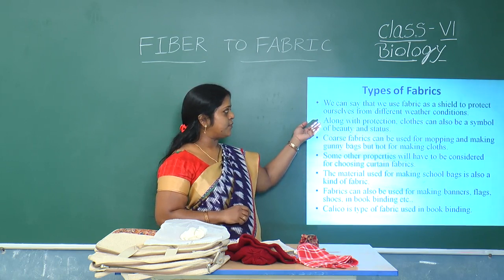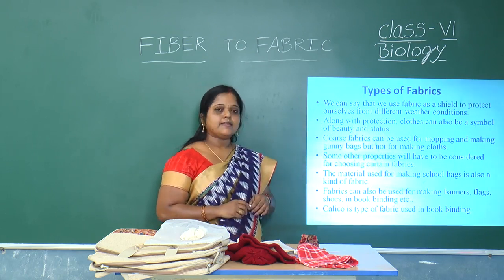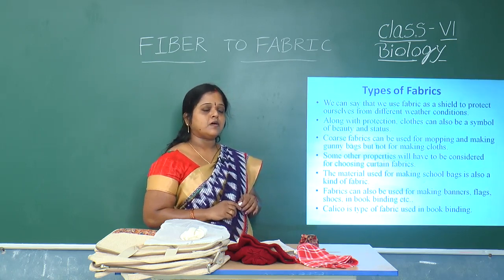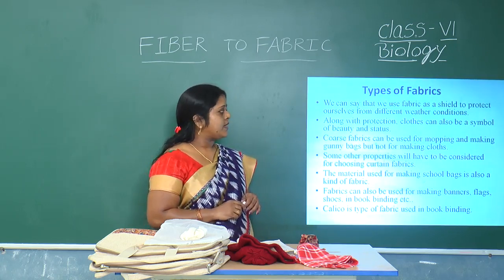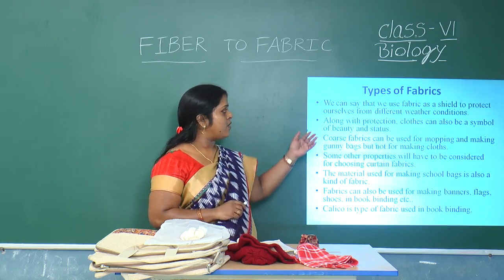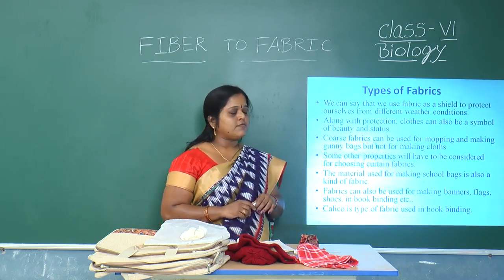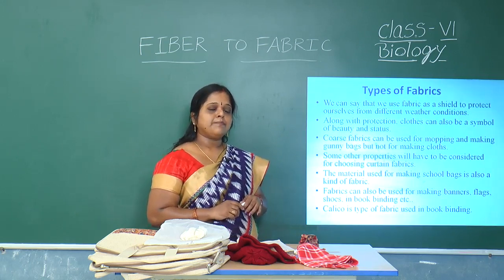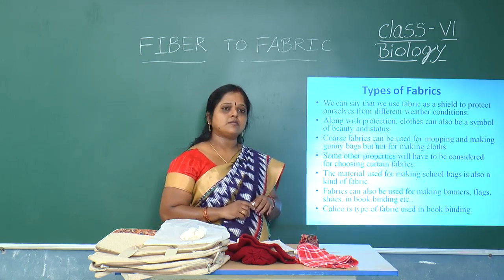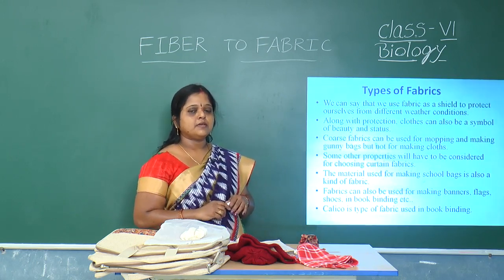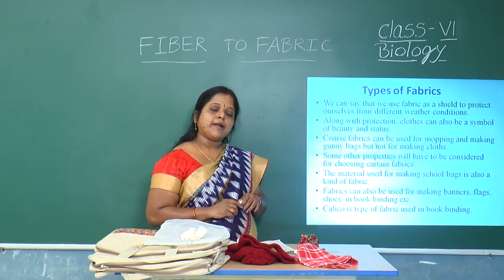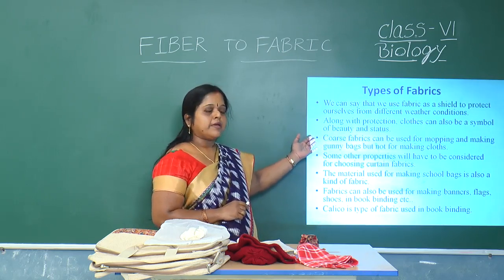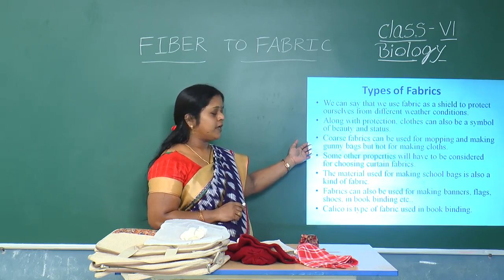First of all, we are going to discuss about the types of fabrics. We can say that we use fabrics as a shield to protect ourselves from different weather conditions. Along with the protection, cloths can also be a symbol of beauty and status. So selection of cloths varies from person to person. Some people may like to wear cloths which are light, thin and shiny fabrics. Somebody will use only bright colored cloths. Coarse fabrics can be used for mopping and making jute bags, but not used for making cloths.